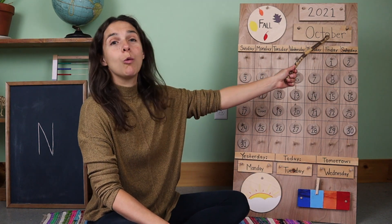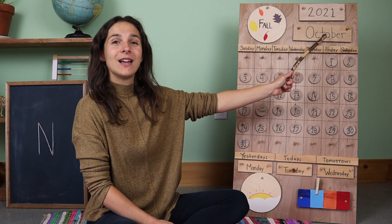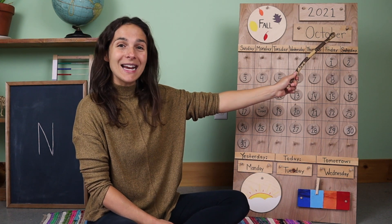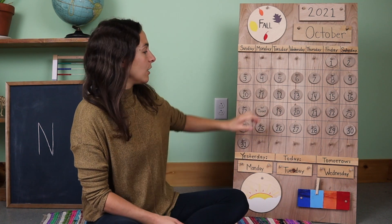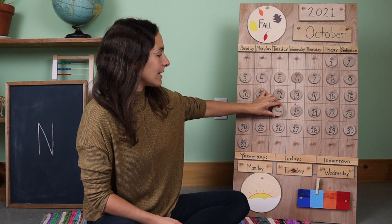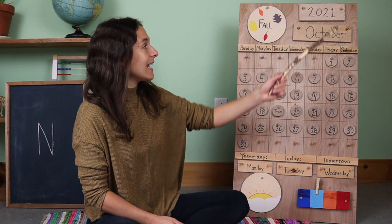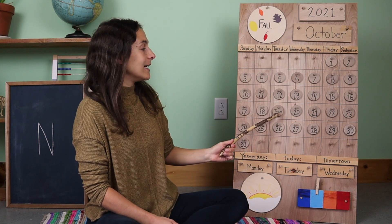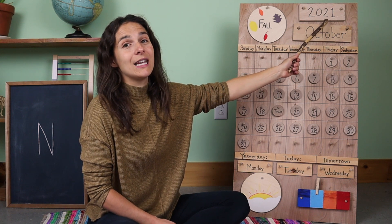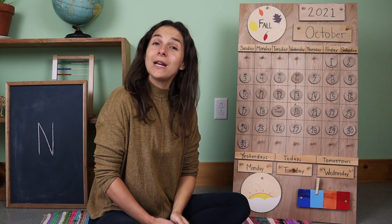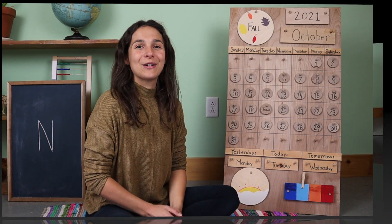Right up at the top, we have the month. Do you remember what month it is? October. That's right. And today is October 19th. So let's move the chip over from yesterday. Yesterday was October 18th, and today is October 19th. And right up here, we have the year. You can say that the year is 2021. Both of those ways are correct.